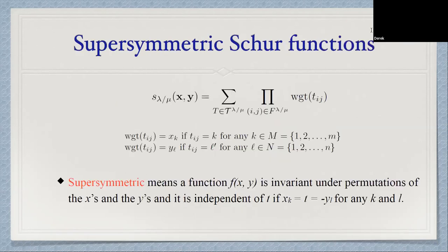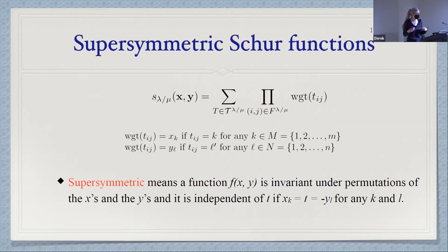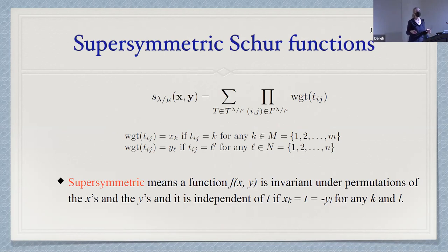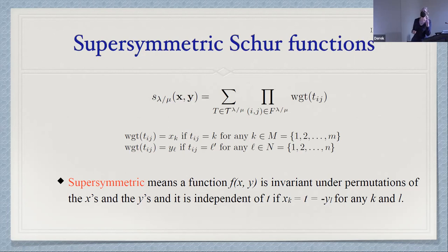The reason we care is that you can define supersymmetric Schur functions. You weight the blue entries by X's and the red entries by Y's. The supersymmetric Schur functions are symmetric in X and symmetric in Y. Additionally, there's another condition: if you replace one of the X's by T and one of the Y's by T, the result is independent of T. So it's a little bit more than just being supersymmetric in both.